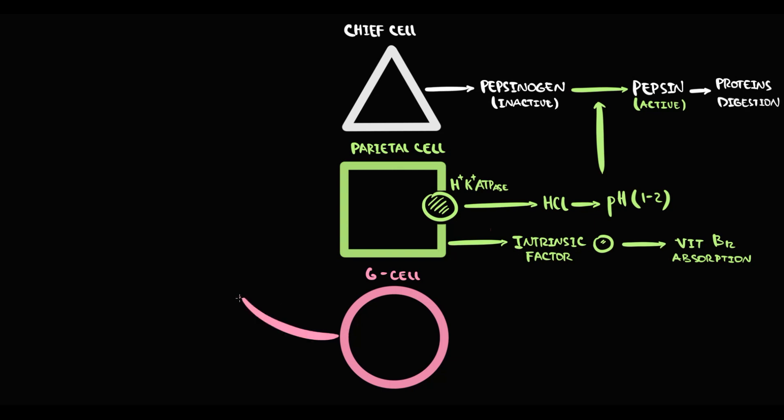G cells produce gastrin. Gastrin directly stimulates parietal cells, but also gastrin stimulates enterochromaffin-like cells. In response to this, enterochromaffin-like cells produce histamine. Histamine acts on H2 receptors on parietal cells, thereby stimulating them.